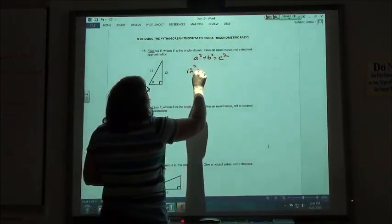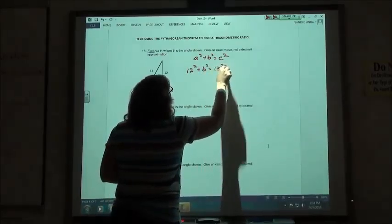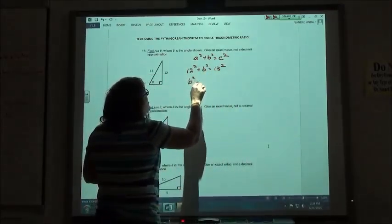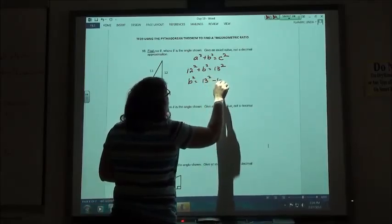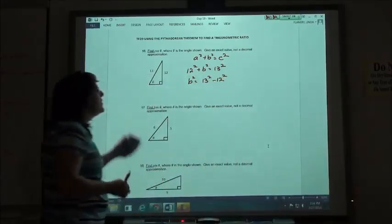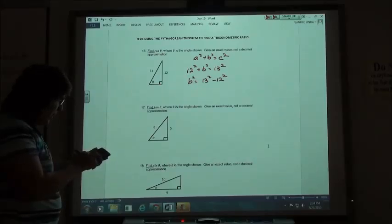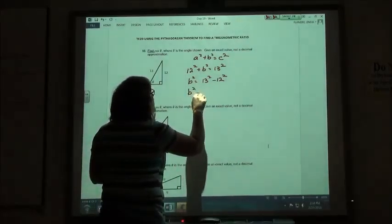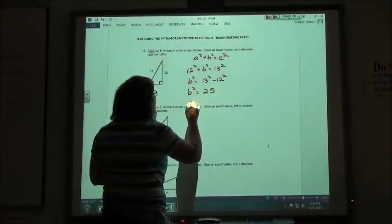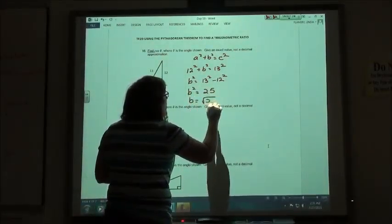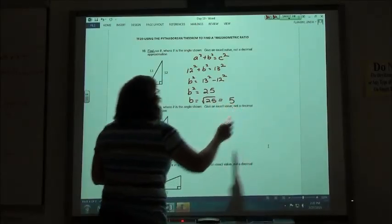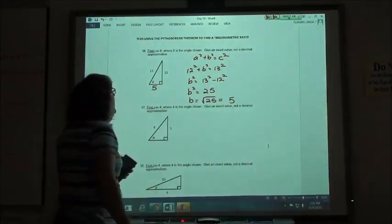So 12 squared plus B squared would have to equal 13 squared. B squared is going to equal 13 squared minus 12 squared. You can figure those out, but I'm just going to put it in my calculator like that. 13 squared minus 12 squared is going to give me 25. So B squared equals 25, which means B equals the square root of 25, which happens to be 5. So that side is 5.